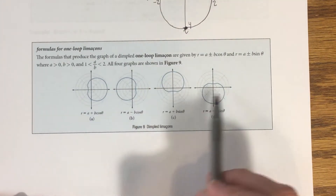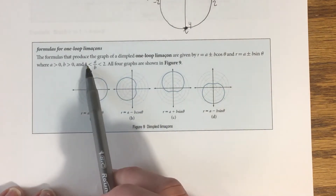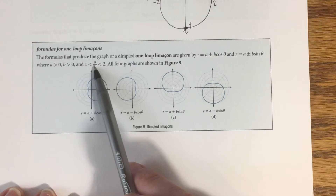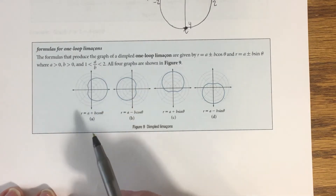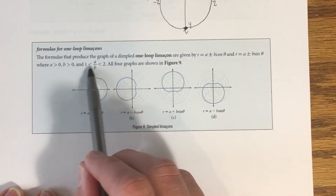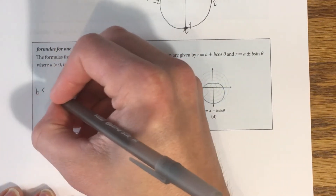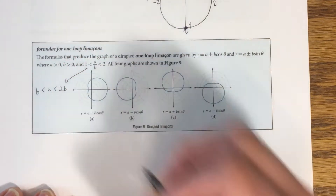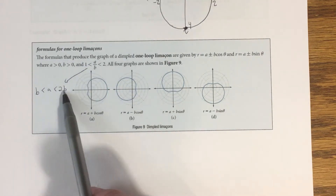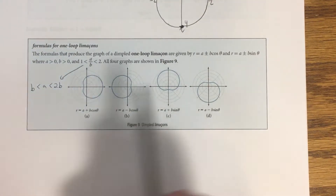These graphs don't contain the pole — they don't pass through it at all. We can see why from the definition: the condition is that a/b is greater than 1 but less than 2, or equivalently b < a < 2b. So a is larger than b but not too large. That's how you know you're looking at a one-loop limaçon.